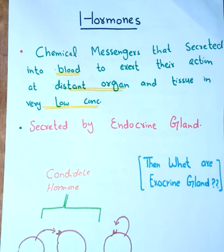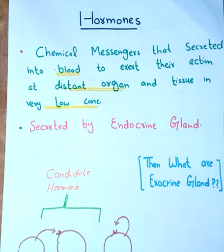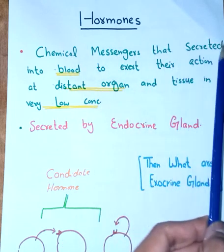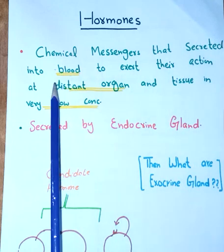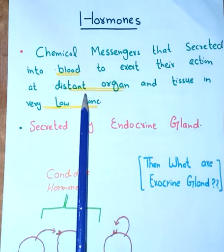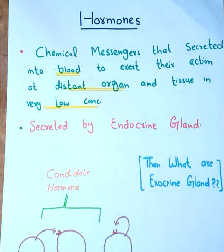Let's start from the definition, and from this definition I will extract some hallmarks of the hormone — some very prominent characteristics of the hormone. So listen to this definition very attentively. Hormones are defined as chemical messengers that are secreted into blood to exert their action at a distant organ or tissue in very low concentration.